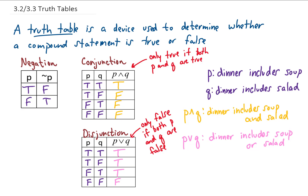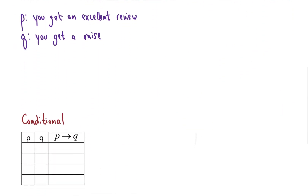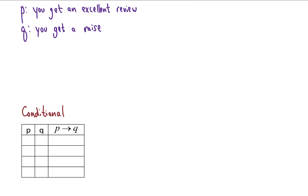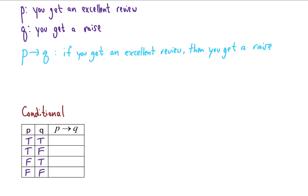Now let's look at our conditional, or if-then truth table. I've set up a scenario where p is 'you get an excellent review' and q is 'you get a raise.' So the statement 'p then q' means: if you get an excellent review, then you get a raise — your boss tells you this. In the first row, you get an excellent review and you get a raise, so that statement your boss made is true.